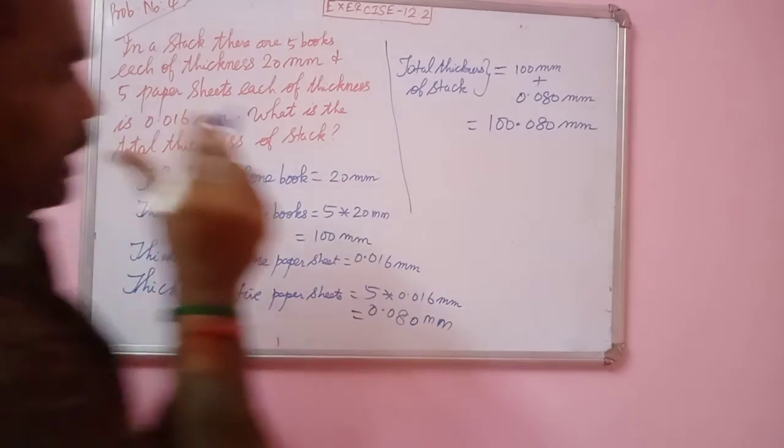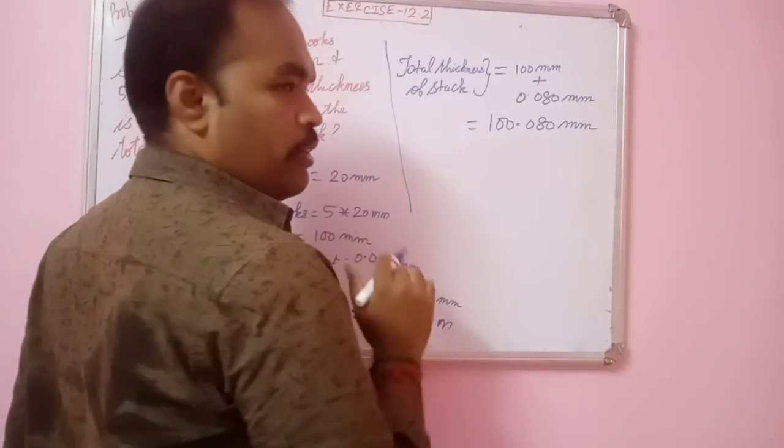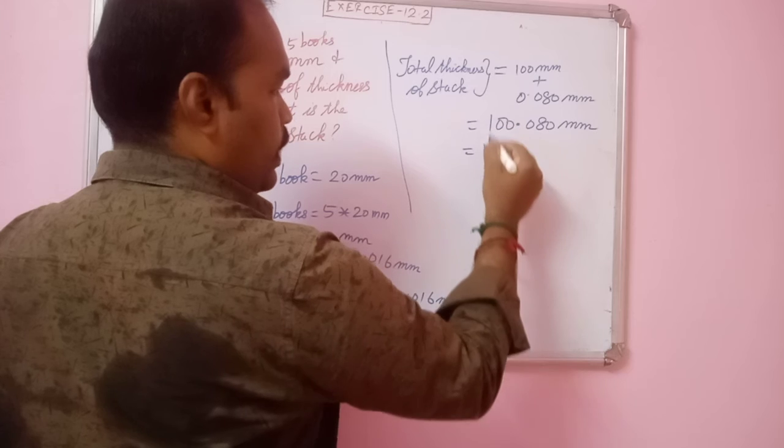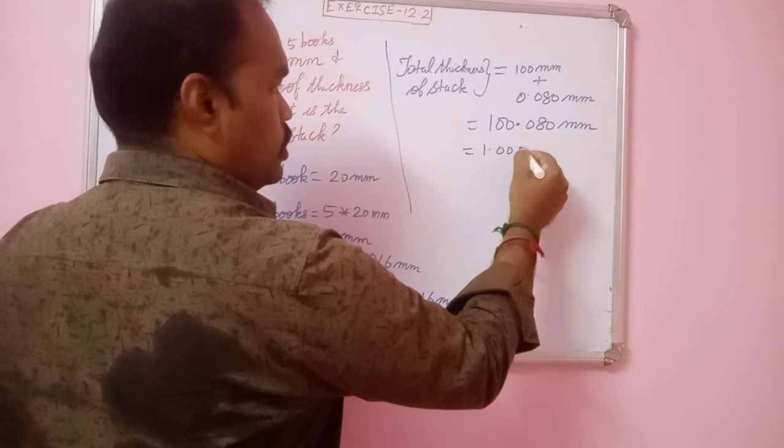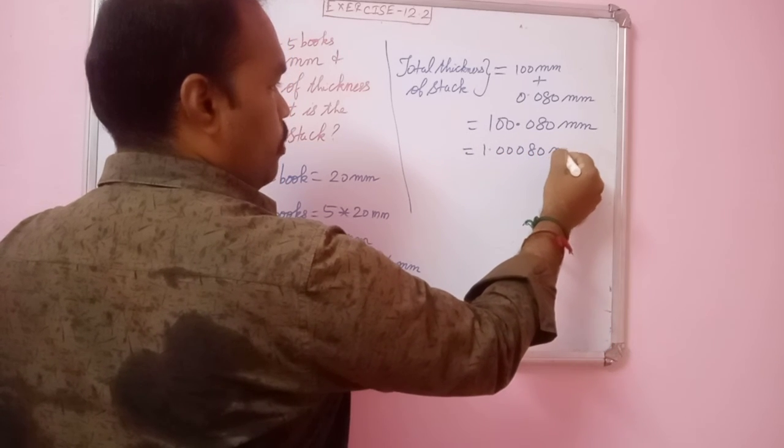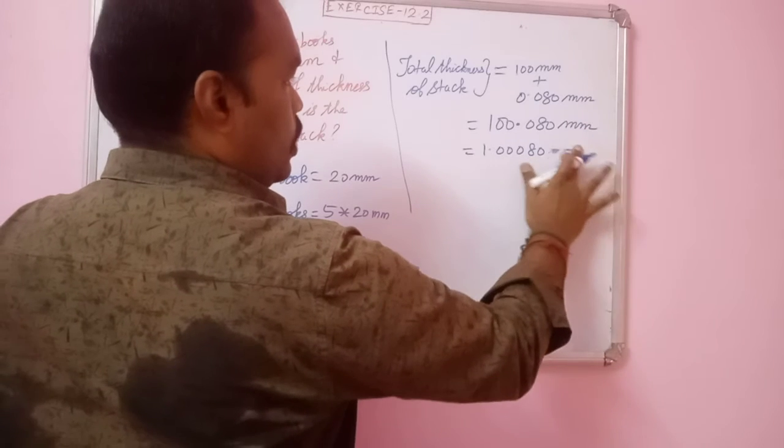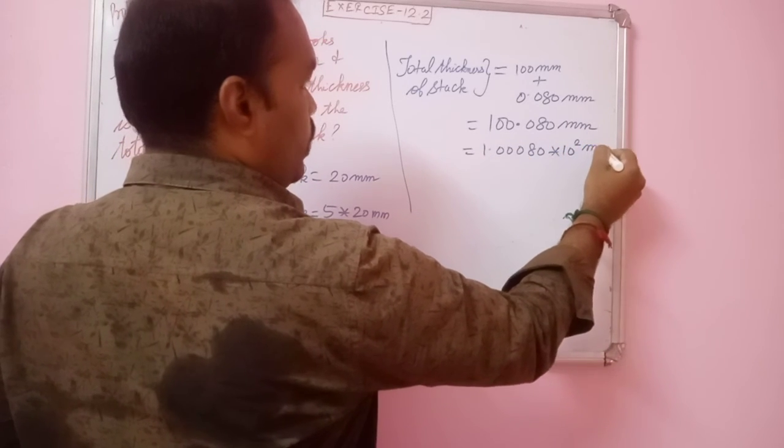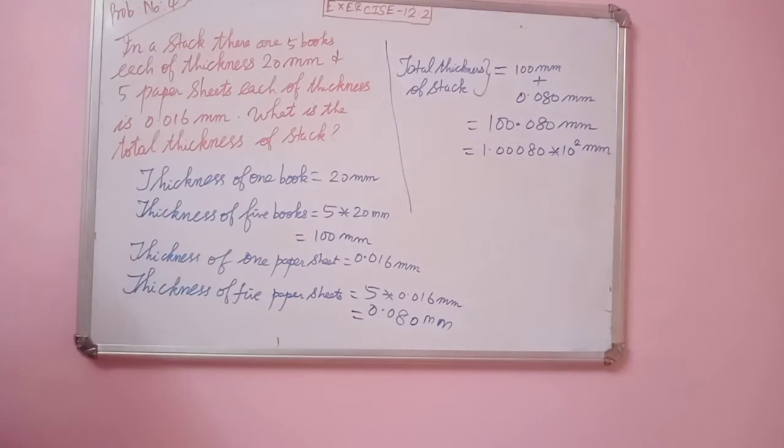So, now, next is in the standard form. If we need to keep this, this decimal, if we keep here: 1.080 mm. So, how we can determine? Into 10 power 2, mm. 1.080 into 10 power 2 mm.